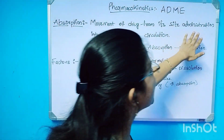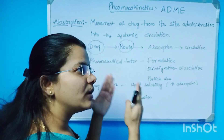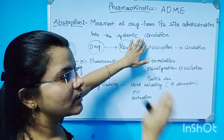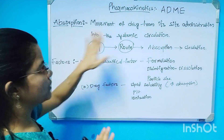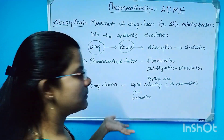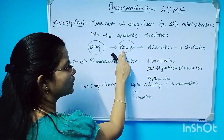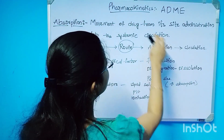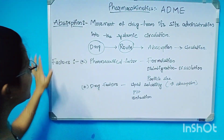The movement of drug from the site of administration into the systemic circulation — systemic circulation means blood. Whatever route is used, the drug must reach the blood. That movement is absorption, into the systemic circulation. It is a very important factor. That is called absorption.